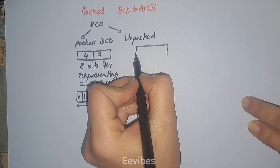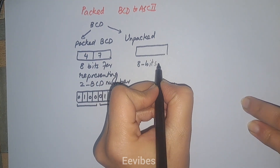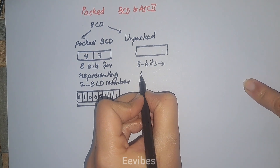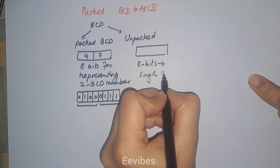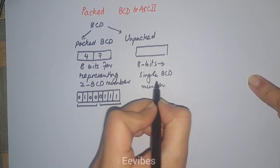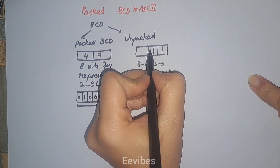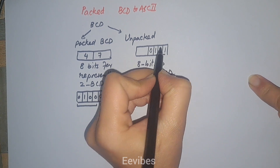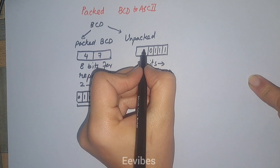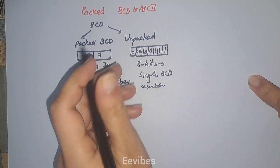In the unpacked BCD notation, eight bits are used for representing a single BCD digit. So eight bits are allocated for a single BCD number. For example, to represent just seven, we place seven in the lower nibble while the higher nibble is filled with zero. This is called the unpacked BCD representation.